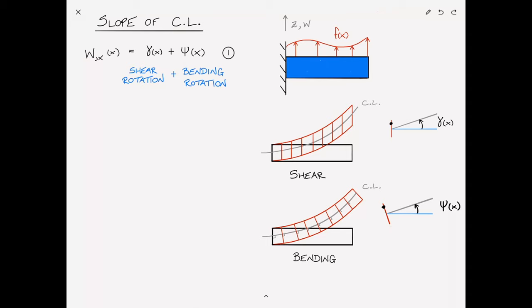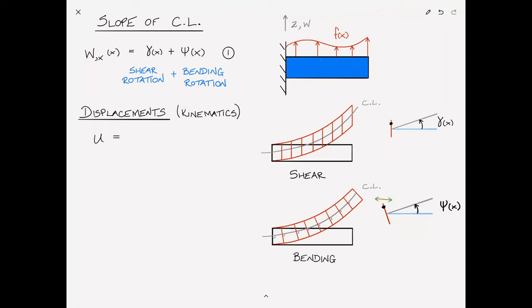Our next step is to write out our displacement field. Let's consider the displacement u, which is the displacement in the axial direction. Looking at the cross sections, we see that the only displacement in the u direction is due to bending, because shear causes no rotation of the cross section and therefore no displacement in the u direction. The displacement u can be written as negative z times ψ(x), where ψ is the bending angle and z is the distance of the mass from the center line. The negative sign arises because the displacement is in the negative u direction when ψ is positive.